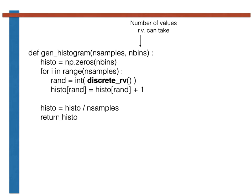I have assumed here that the random variable takes a value between zero and N bins minus one, which may or may not be true in your case. N samples, meanwhile, is the other argument. And this is the number of samples of the random variable that we are going to use to generate our estimate of our histogram.